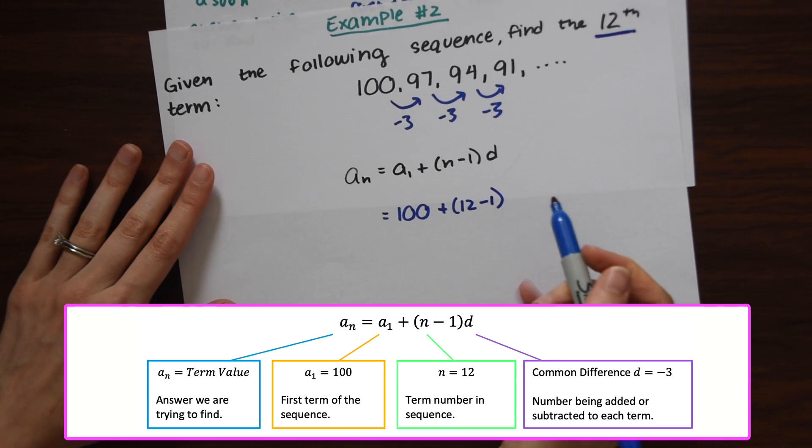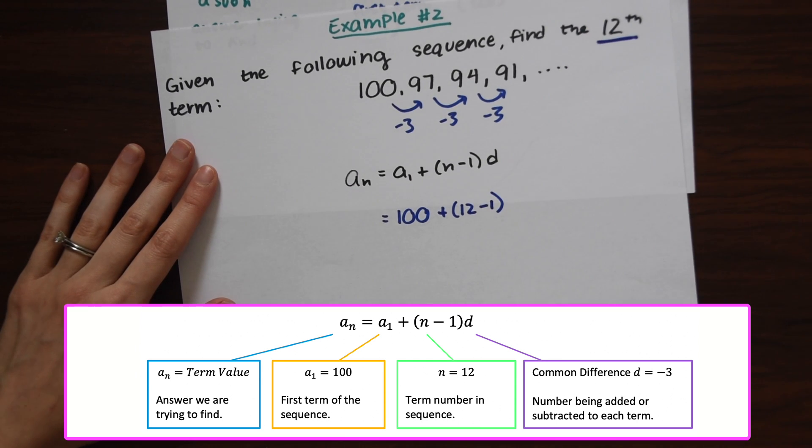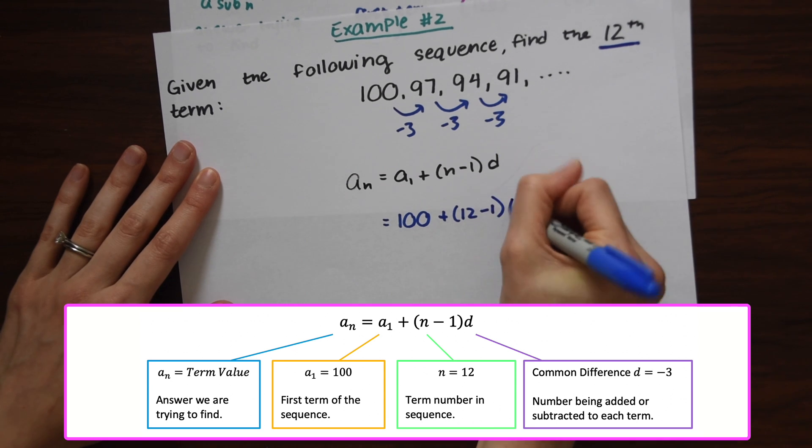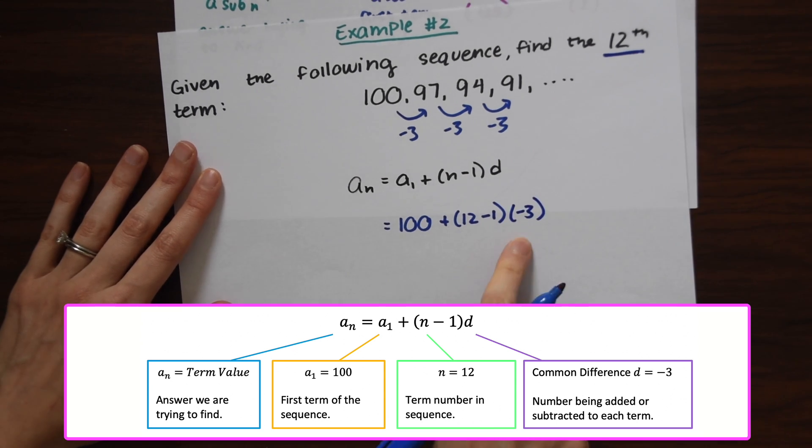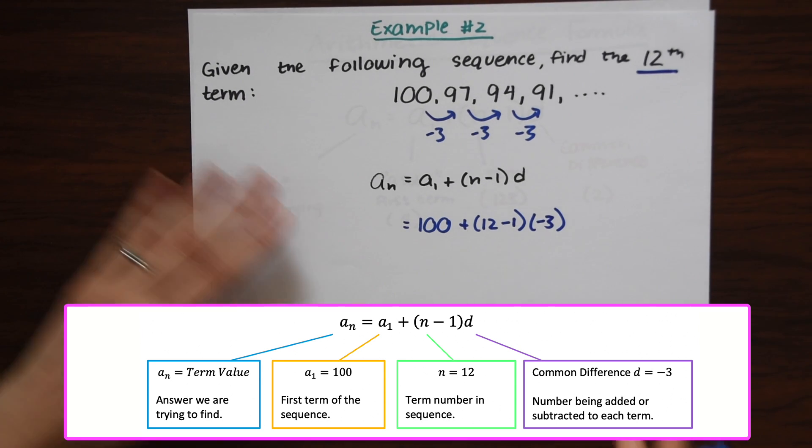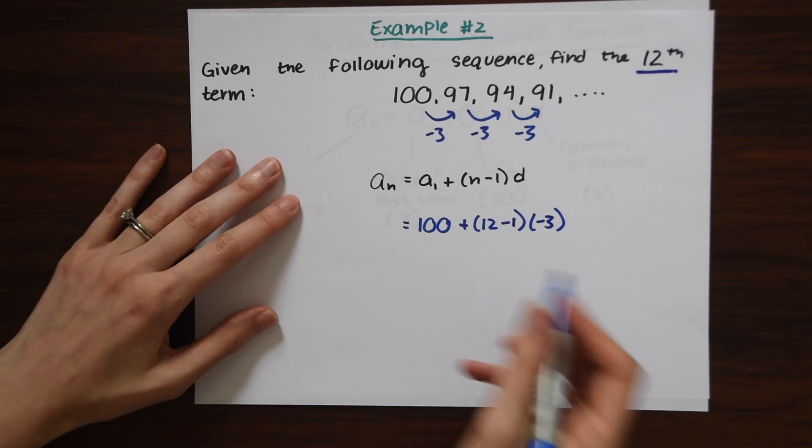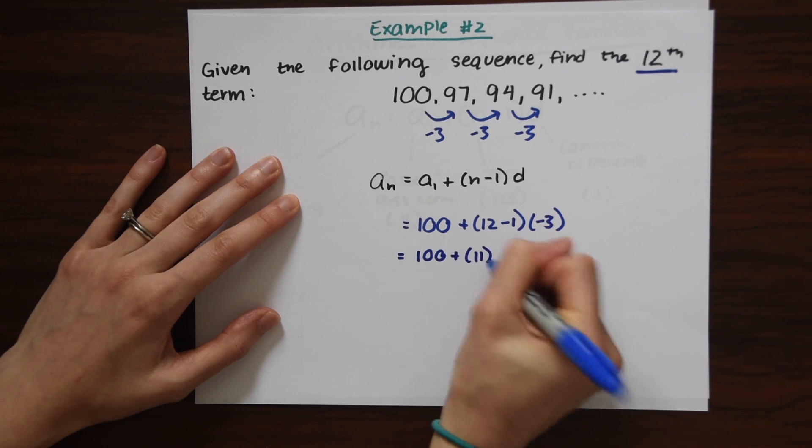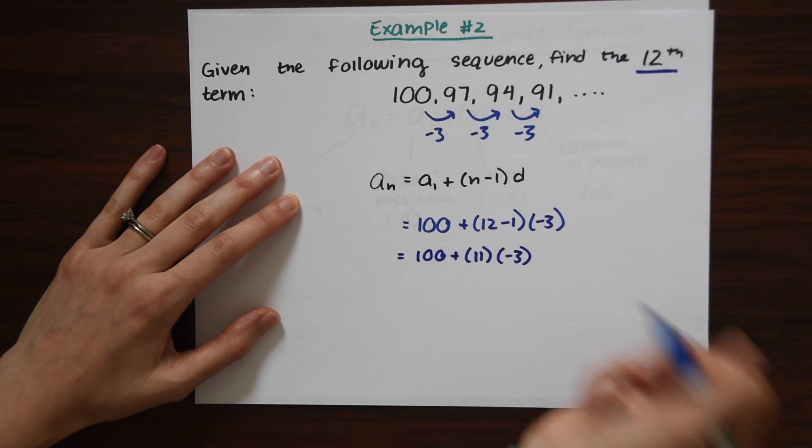And then D is that common difference, that number you're adding or subtracting by. So this time that's minus 3. So notice that this common difference this time is a negative value, because we're subtracting. And now we're just going to solve as normal. So this is equal to 100 plus 11 times negative 3.